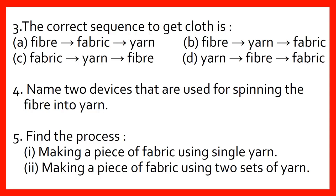Question number 4: Name two devices that are used for spinning fiber into yarn. Question number 5: Find the process — number 1: making a piece of fabric using single yarn; number 2: making a piece of fabric using two sets of yarn.